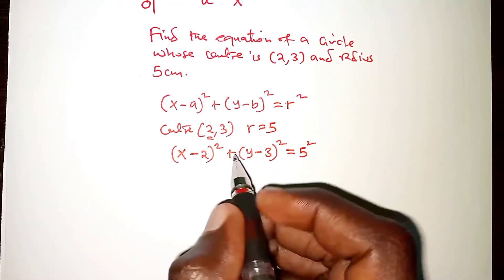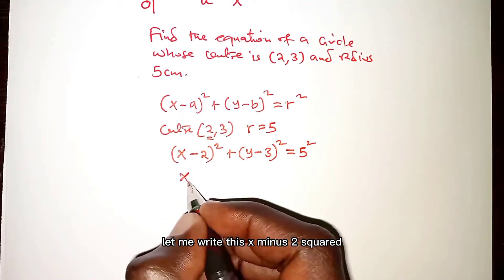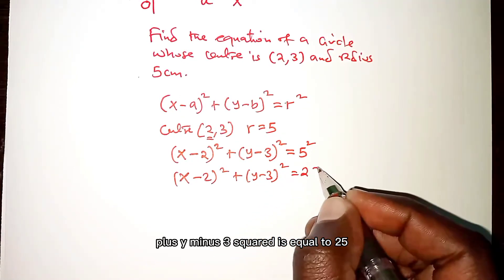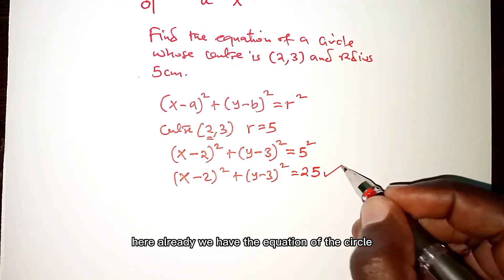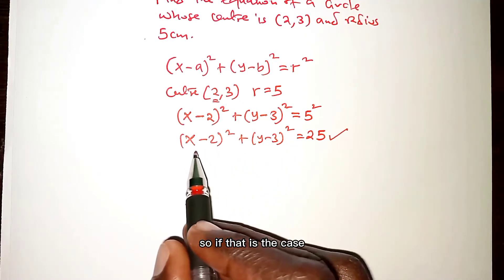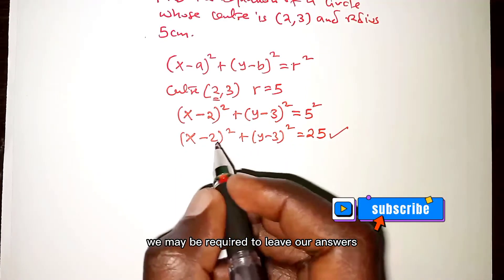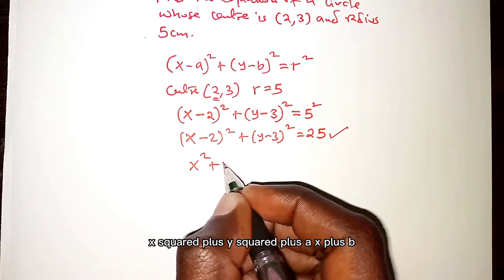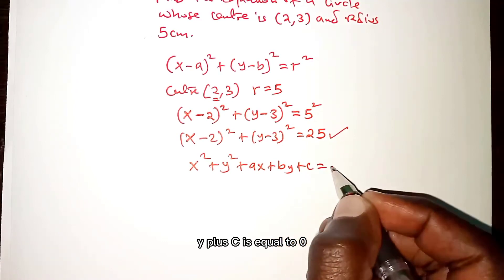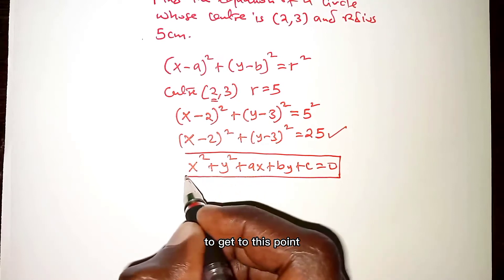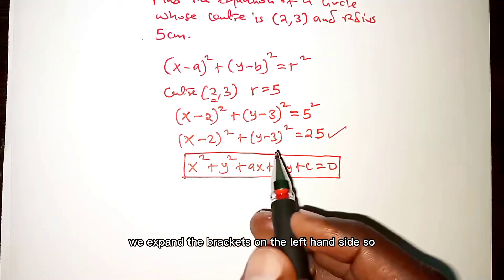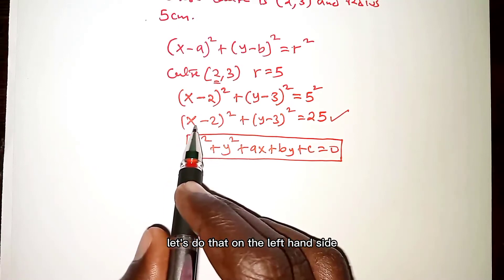We square 5 to get 25, giving us (x minus 2) squared plus (y minus 3) squared equals 25. So here we have the equation of the circle in its general form. However, the equation may require us to expand the left-hand side, leaving the answer in the form x squared plus y squared plus ax plus by plus c equals 0.